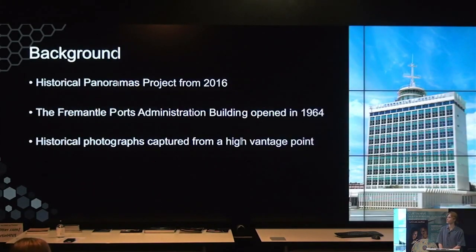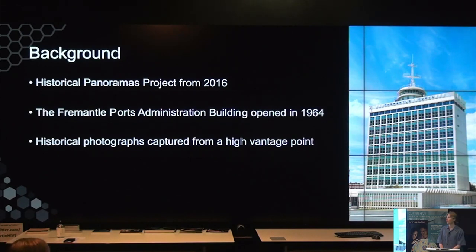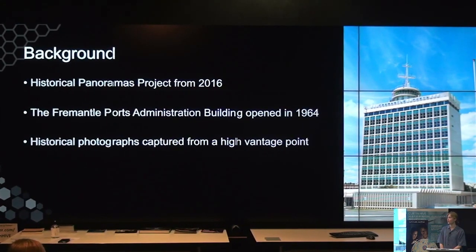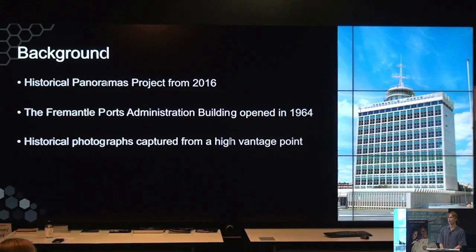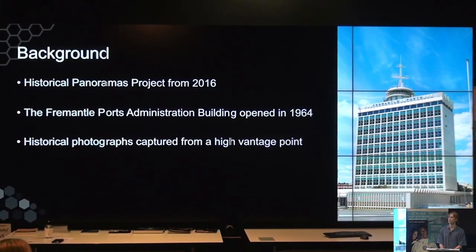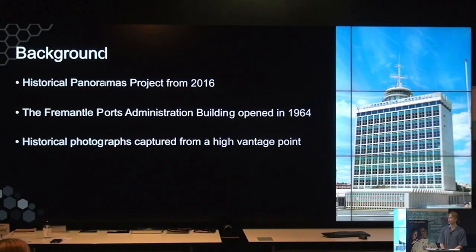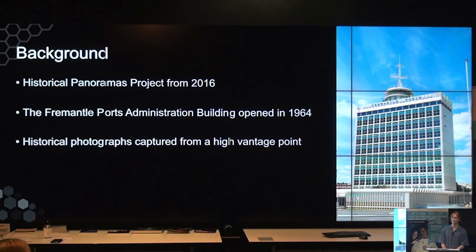The Historical Panoramas Project has a website which was first launched in 2016. It sourced photographs from the State Library of Western Australia, found images from 20 different locations around Perth and Fremantle, and created a visually engaging website. In 2021, another summer internship program undertook an analysis of the history of Fremantle and proposed a historic panoramic display of the Fremantle Harbour, which has inspired this project.